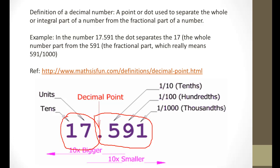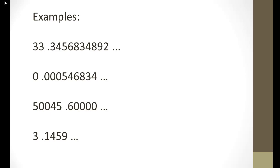Let's look at some more examples. In these examples below, we see that in the first example, 33 would be the integral or whole part of the number, and 0.3456834892 would be the decimal part of the number.